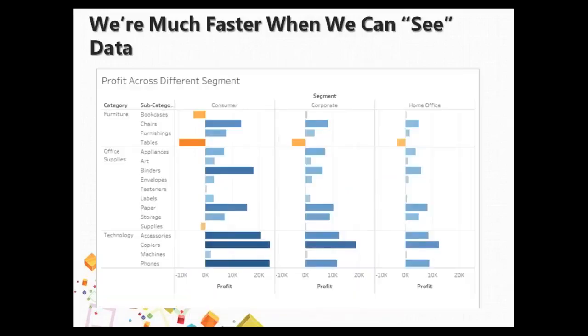The same visualization presented as a bar graph lets you point out the best-selling category. Roughly, copiers are the best performer and tables are the worst. This is the kind of quick insight a well-structured Tableau visualization should deliver.